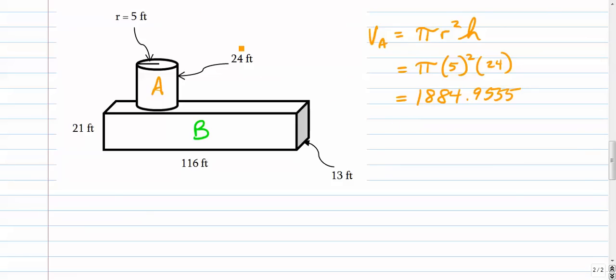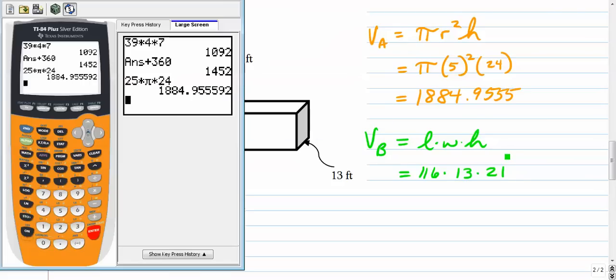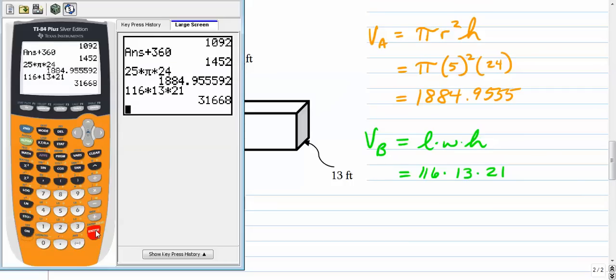Alright, and the bottom figure, the volume of that is length times width times height. It's a rectangular prism. So we're going to go 116 times 13 times 21, and that's 31668.